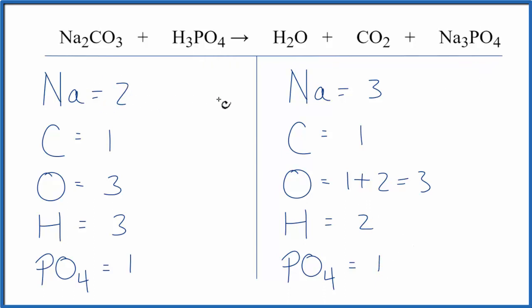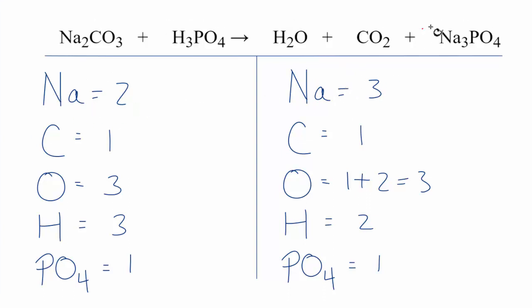When I see I have a two and a three here, I'm going to need to get this to be an even number so I can balance this out. So let's put a two in front of the Na3PO4. So three times two, that gives us six, and then one PO4 times the two, that gives us two of those.